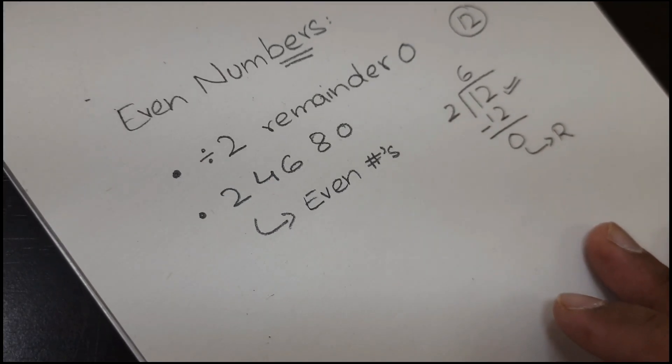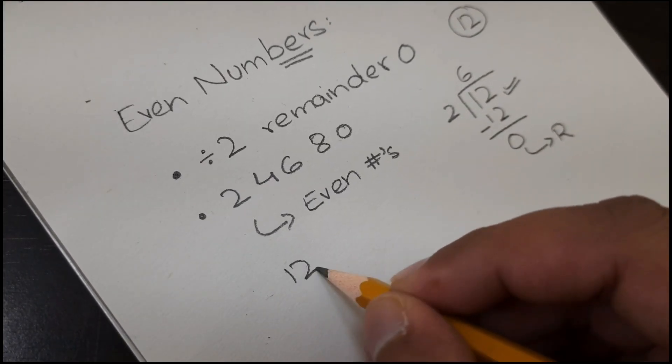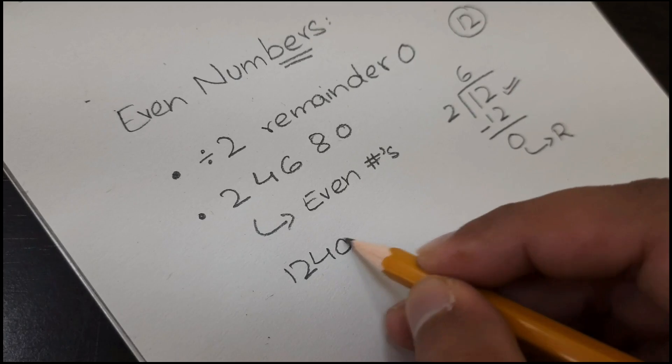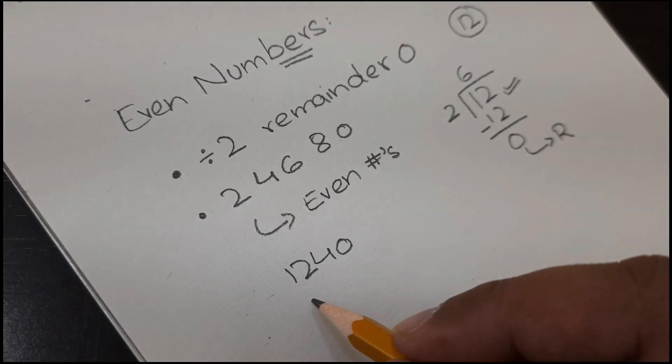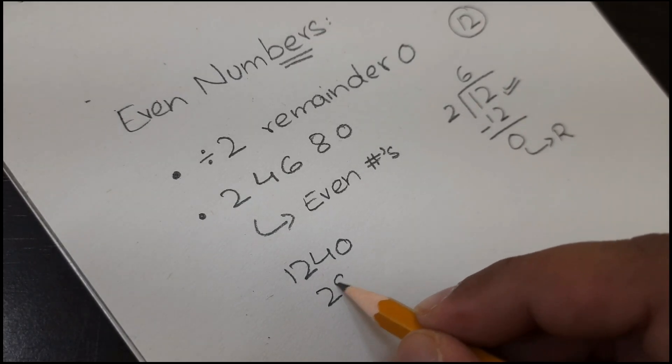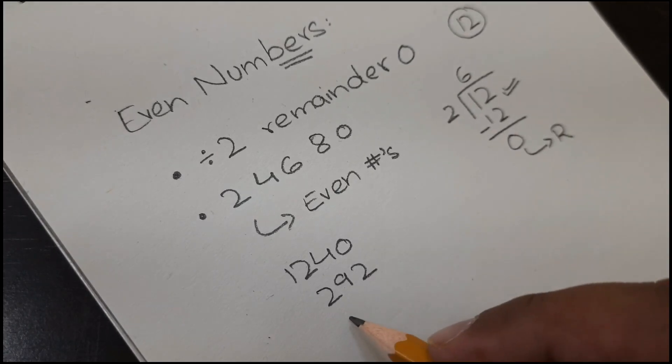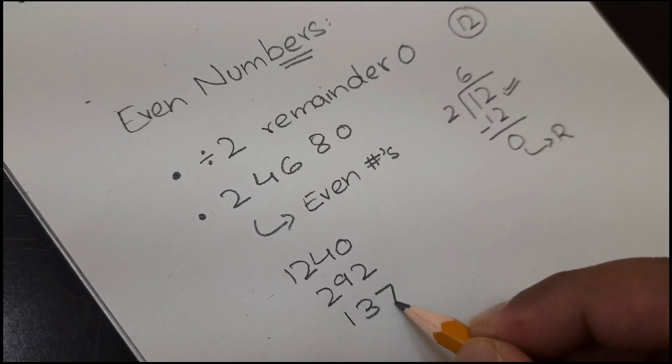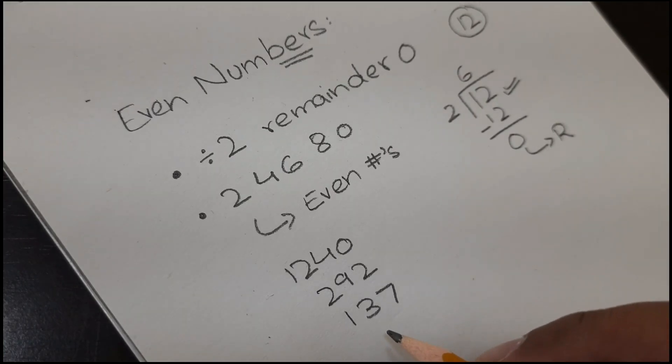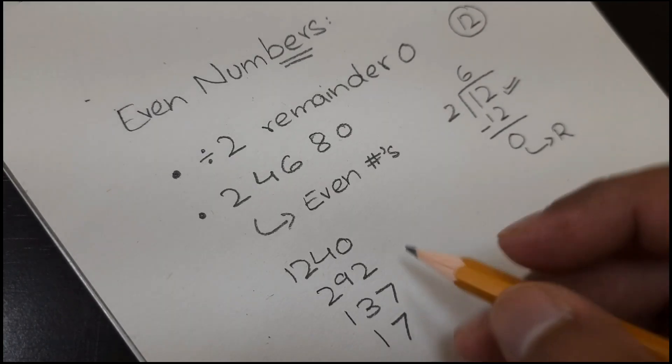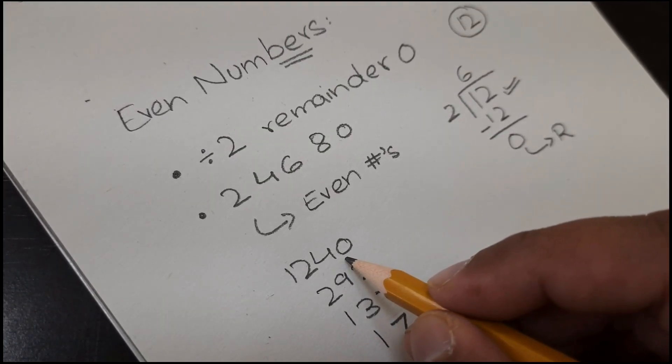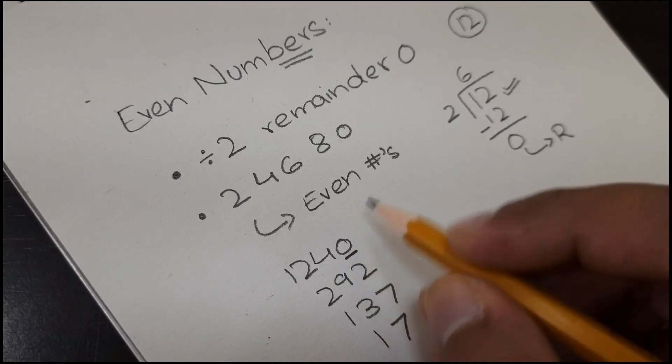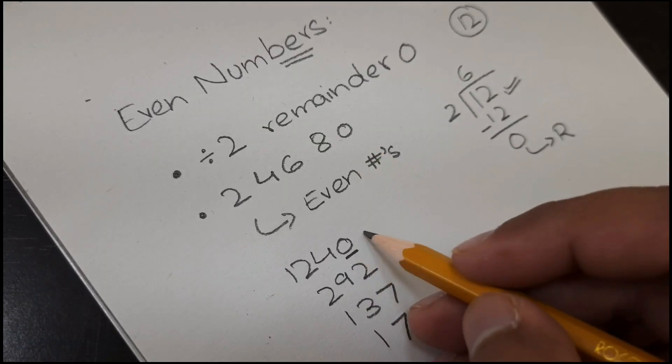For example, we have the numbers 1240, 292, 137, and 17. Let's see. For 1240, the last digit is 0. Yes, 0 is in there, so it's an even number.